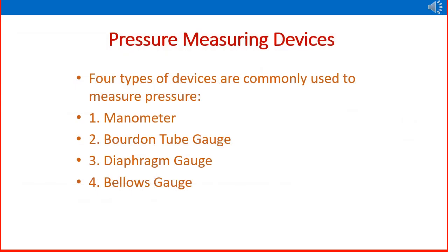Next, let us discuss how we can measure pressure in the plant using pressure measuring devices. Normally in the field, four types of devices are commonly used to measure pressure: a manometer, a Bourdon tube gauge, a diaphragm gauge, and a bellows gauge.